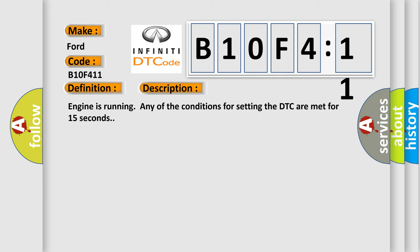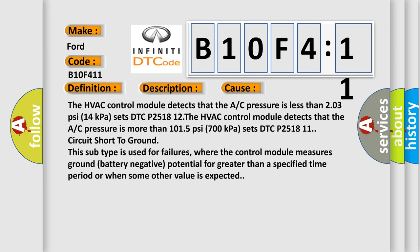This diagnostic error occurs most often in these cases. The HVAC control module detects that the A/C pressure is less than 203 psi (14 kPa) and sets DTC P251812. The HVAC control module detects that the A/C pressure is more than 1015 psi (700 kPa) and sets DTC P251811.